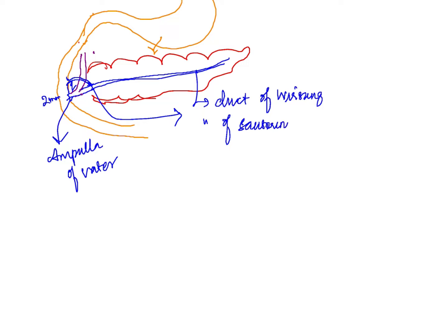The duct of Santorini runs just above the common opening. We also have intercalated ducts. These intercalated ducts collect the secretions from the acinar cells and drain into the main collecting ducts. The intercalated ducts are connected to the acinar cells.